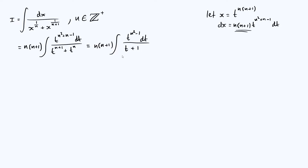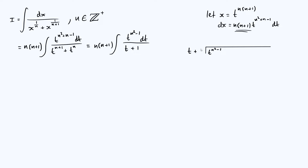So how are we going to integrate t to the n squared minus 1 over t plus 1? What I'm going to do is use polynomial long division, as we did in the case where n equals 2. So let's set up that polynomial long division: we are taking t to the n squared minus 1 and dividing it by t plus 1.